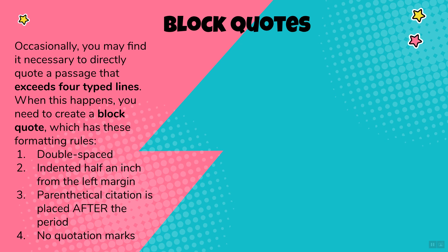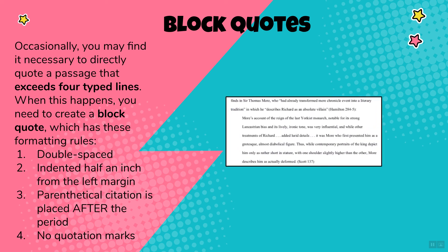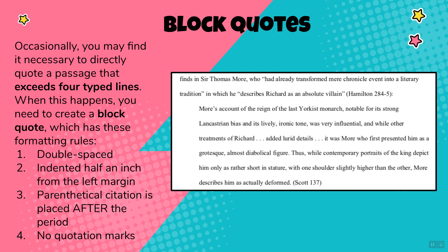Occasionally you may need to directly quote a passage that exceeds four typed lines. When this happens, create a block quote with these formatting rules: it is double-spaced just like the rest of the paper; it is indented half an inch from the left margin; the parenthetical citation is placed after the period — this is the only time that happens; and it is not put in quotation marks. You should only use block quotes if you have a really good reason. Most of the time you can and should cut down the quote by choosing only the most important words and phrases and paraphrasing the rest.